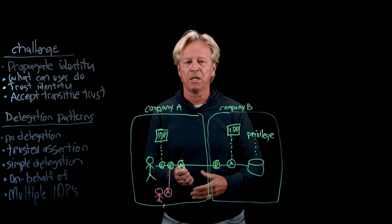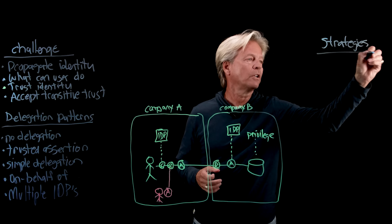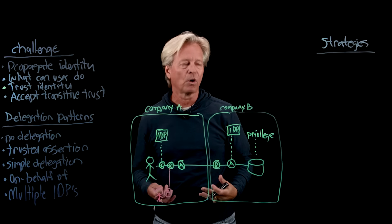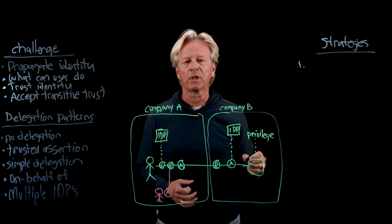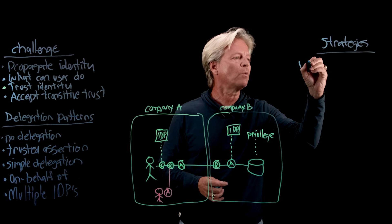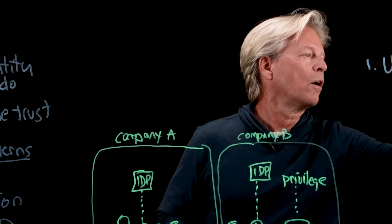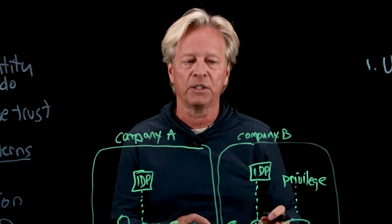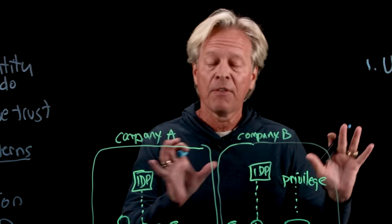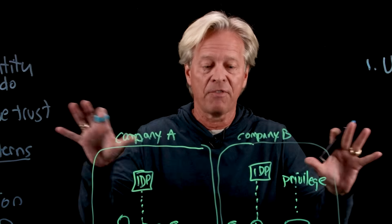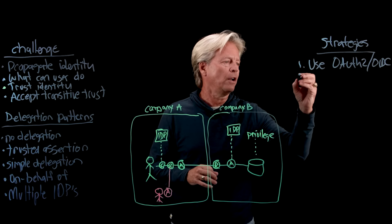These are the patterns and challenges we're seeing emerging, especially around identities and identity propagation in organizations. Let's start thinking about what our strategies are to deal with this. This is an emerging space, and the strategies I'm going to outline will work but will also evolve. The first strategy is to use OAuth 2 and OIDC — OpenID Connect. This says: let's stick to the standards. We have standards on how to identify users and what their rights and privileges are. If company A and company B both operate on industry standards, that makes this interaction much easier.